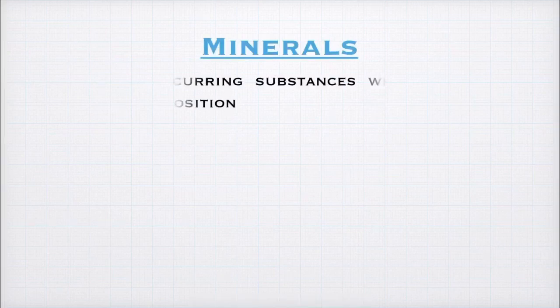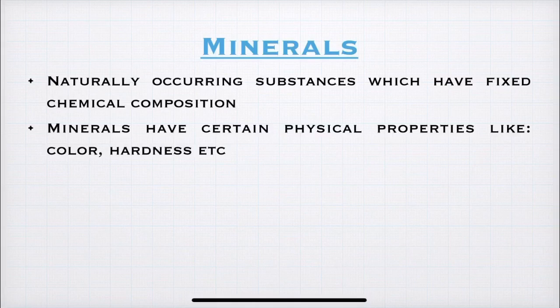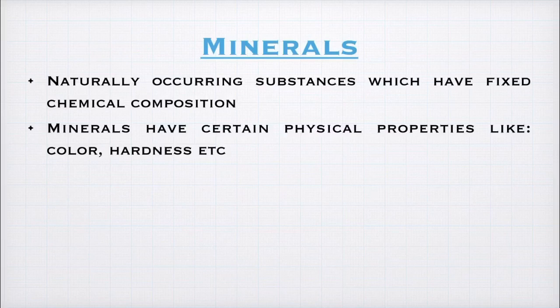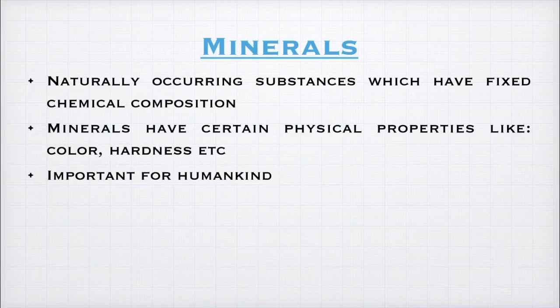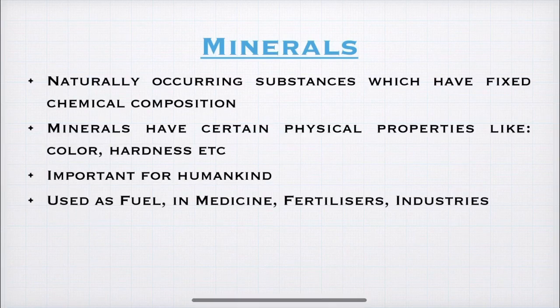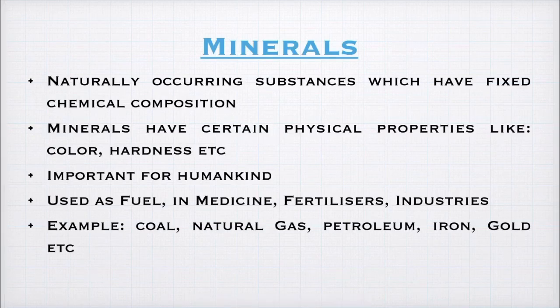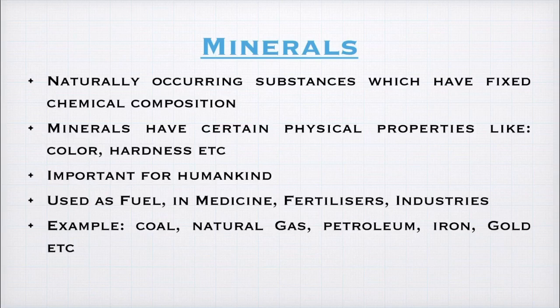Now, we will study the final topic of this chapter which is minerals. So, students, what are minerals? Minerals are naturally occurring substances which have fixed chemical composition. Minerals have certain physical properties like color, hardness, etc. Which means that different minerals can be of different color and have different levels of hardness. Minerals are important for humans as they are used in medicines, fertilizers and industries. Examples of some minerals are coal, natural gas, petroleum, gold, iron, etc. So, students, remember that minerals are used in medicines, fuels, fertilizers and industries. Ok?